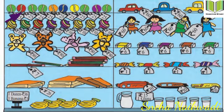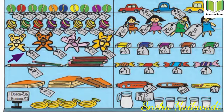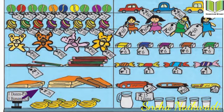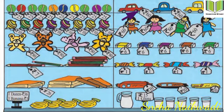The ball is 25 rupees, the top is 10 rupees, the teddy is 80 rupees, the pencil is 7 rupees, the notebook is 20 rupees, one dozen bananas is 36 rupees, and one single banana is 3 rupees. The car is 60 rupees and the doll is also 60 rupees.